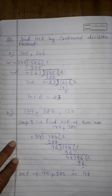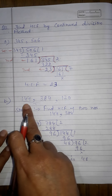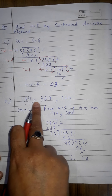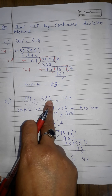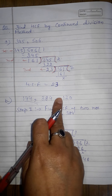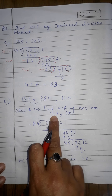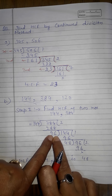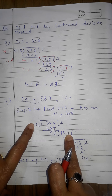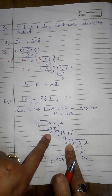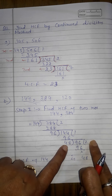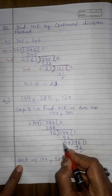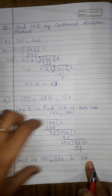One more example with three numbers: 144, 384, and 120. For three numbers using Continued Division, we first find the HCF of any two numbers. I take the first two: 144 and 384. Divide 384 by 144: remainder 96. Then divide 144 by 96: remainder 48. Then divide 96 by 48: remainder 0. So HCF of 144 and 384 is 48.